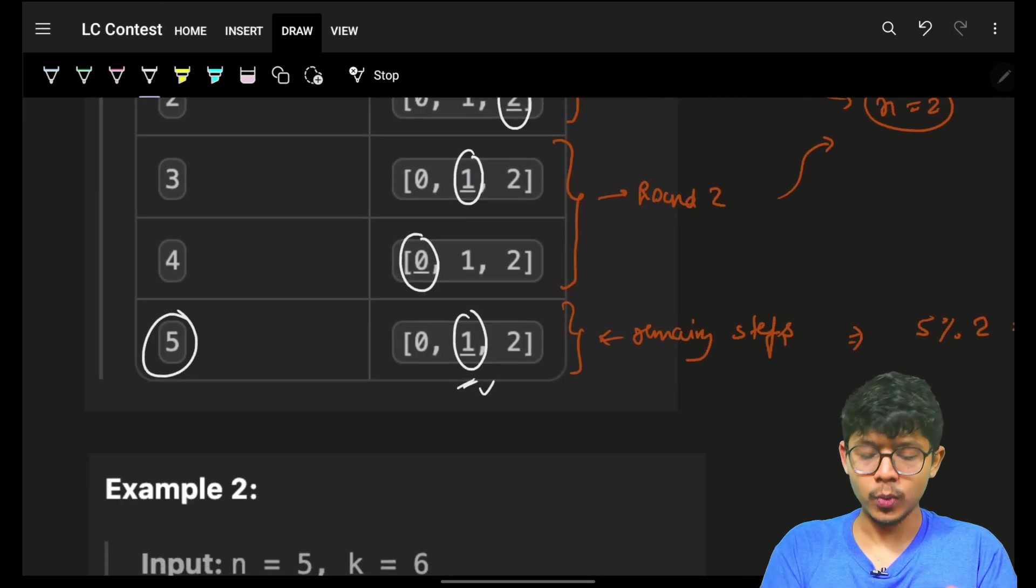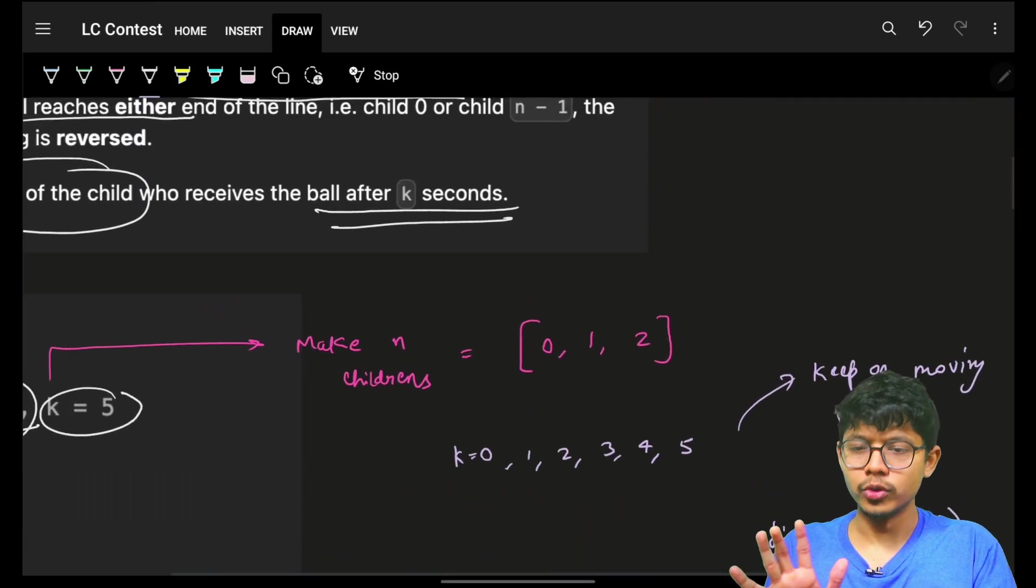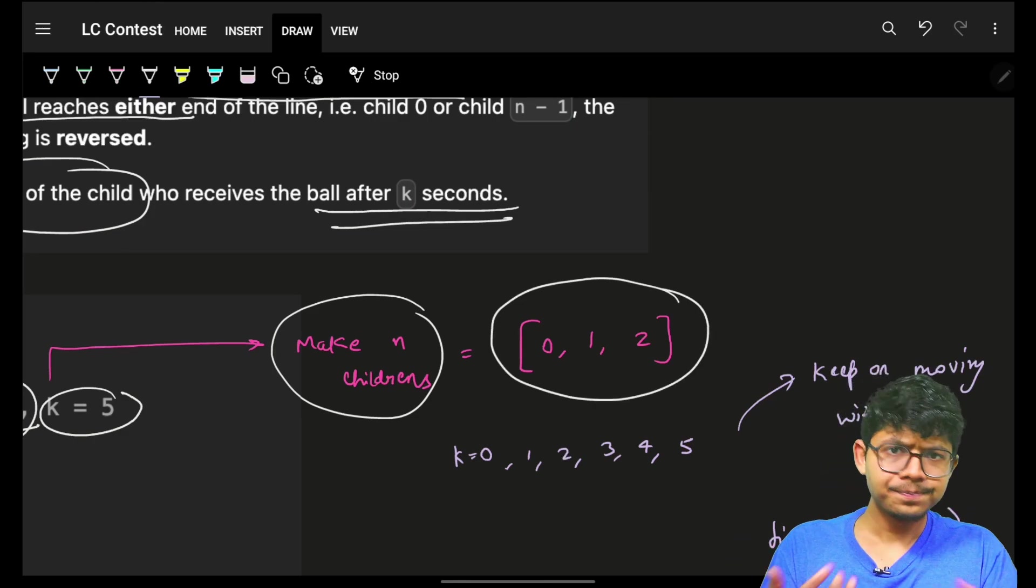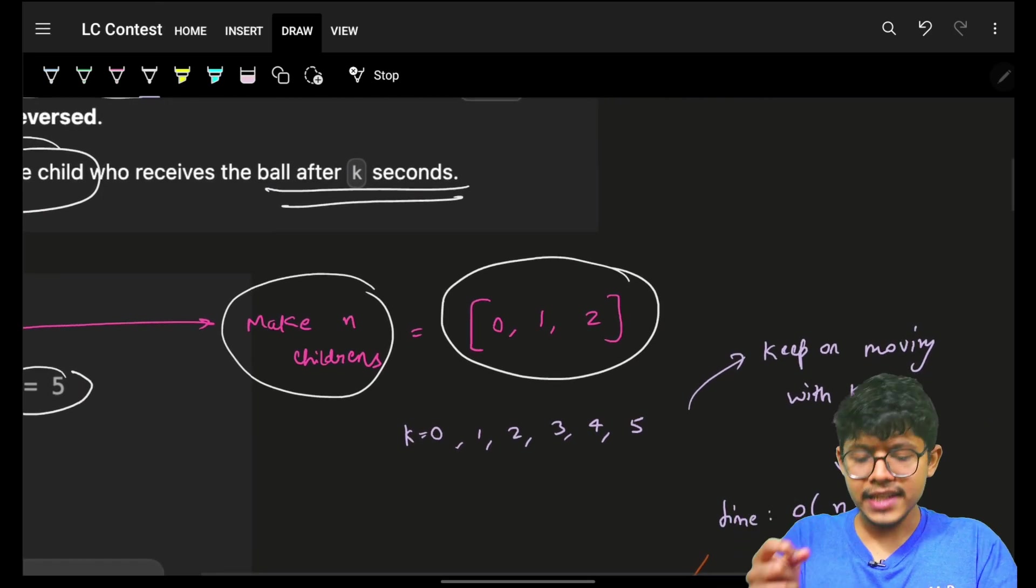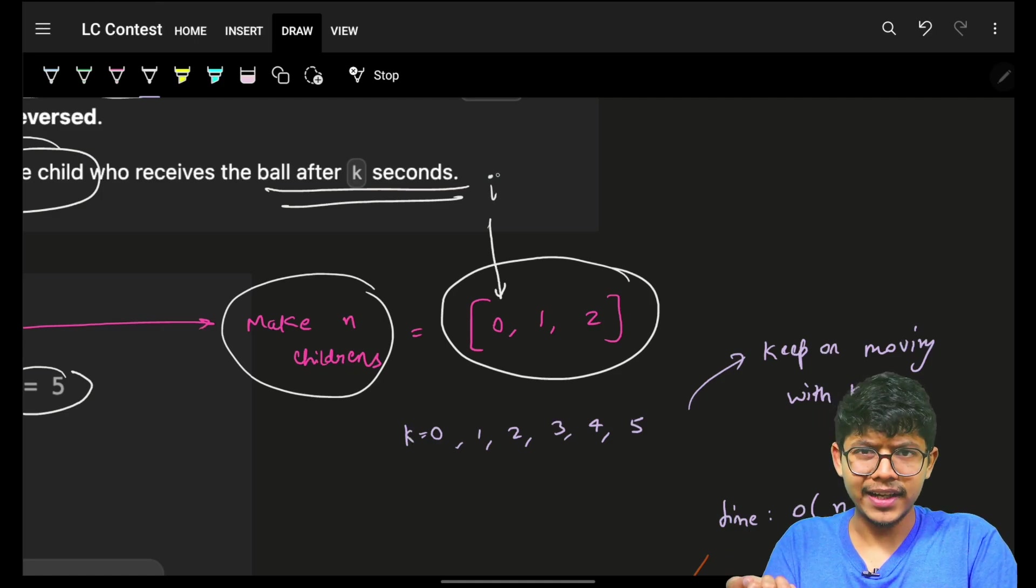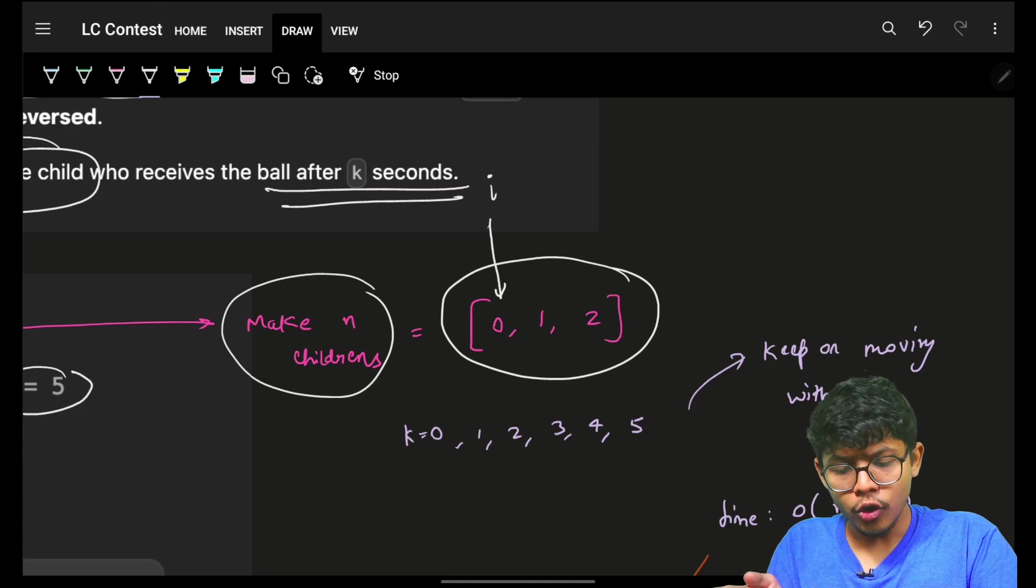Now, if I ask you, what is the normal standard approach? You know, you have n children. You can simply write as a form of an array. Simple n children. Now, at every step, you can just mark, let's say, I am standing here, index is here. Simply, at every k movement, go to the next index i.